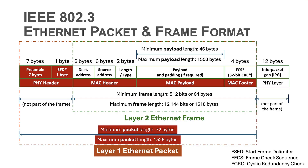The Ethernet packet format continues with the layer 2 Ethernet frame, which consists of MAC header, MAC payload, and MAC footer. As mentioned at the beginning, we have already seen these fields in one of our previous videos, therefore I will skip these fields in this video.